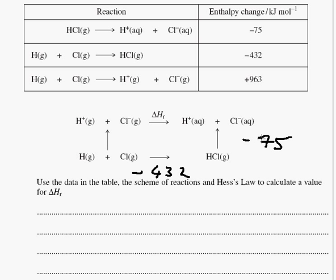What else do we know? We also know that hydrogen gas and chlorine gas going to the ions here is plus 963 kilojoules.